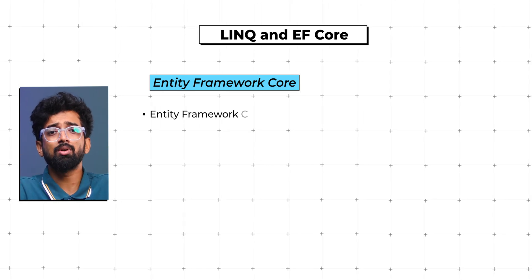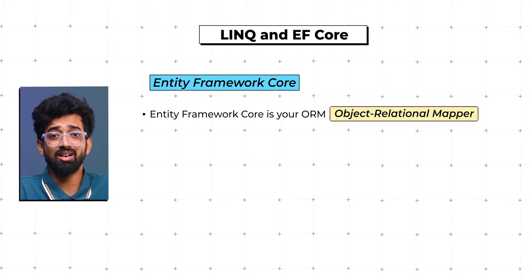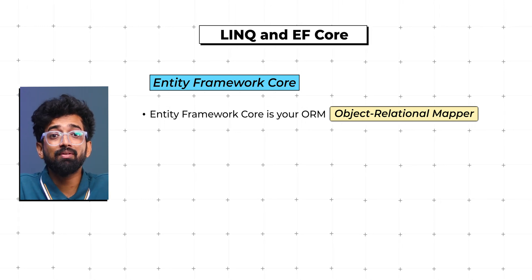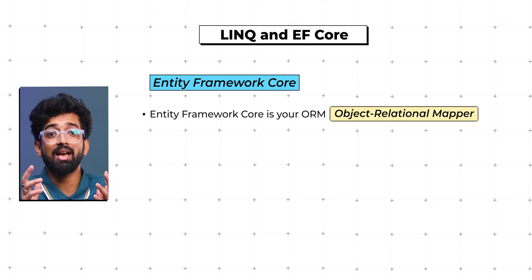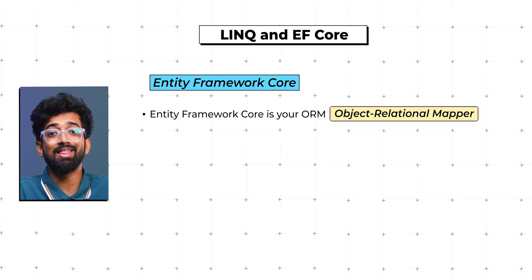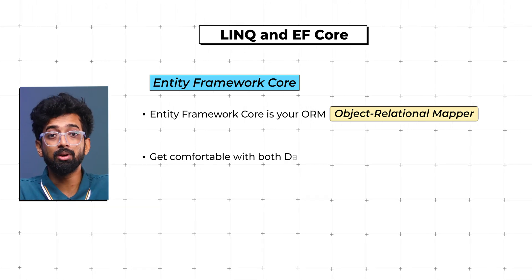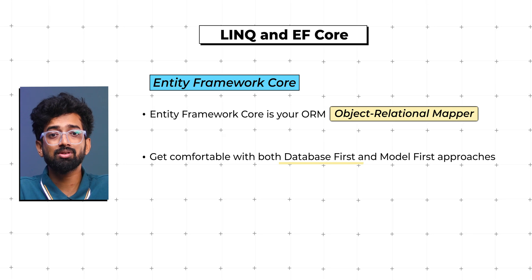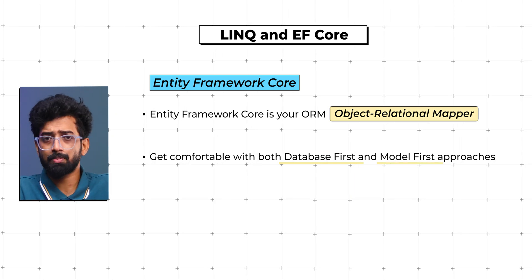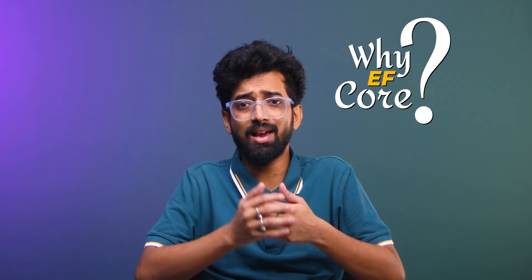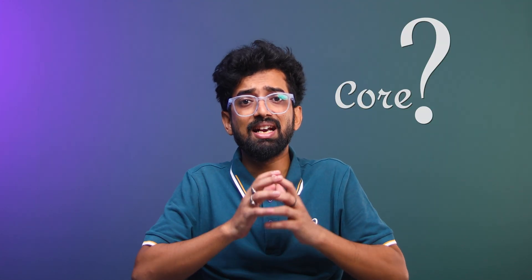Entity Framework Core is your ORM — Object Relational Mapper — for .NET. It simplifies database interaction by allowing you to work with data as strongly typed objects. Get comfortable with both the database-first and model-first approaches to handle your data efficiently. EF Core streamlines data access and manipulation, saving your time and effort.